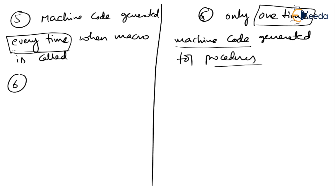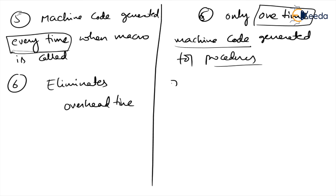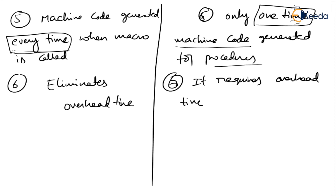Sixth point: macros eliminate the overhead time required to call the procedure and return to the program. Whereas procedures require overhead time to call the procedure and return to the calling procedure.